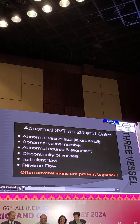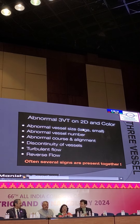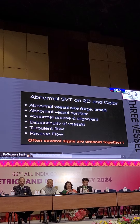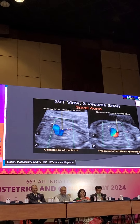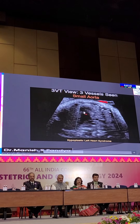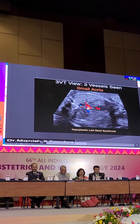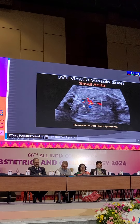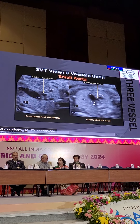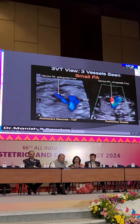Why is this view so important? Because if you see abnormality in the size, shape, number, alignment, course, discontinuation, turbulence, or reverse flow — anything you see in the three-vessel tracheal view will guide you that something abnormal is present. Particularly in coarctation of the aorta, you can have a hypoplastic left heart with no color filling. On a small aorta due to coarctation, you can have a shelf-like structure. Double aortic arch, pulmonary stenosis, pulmonary atresia — you can have retrograde flow.